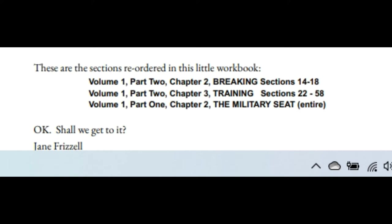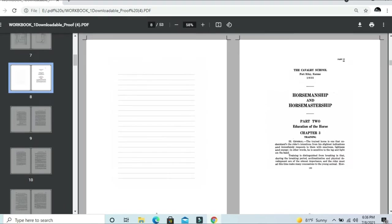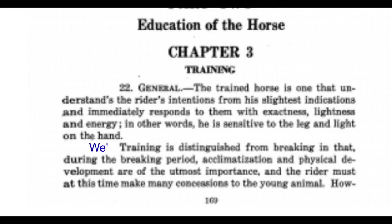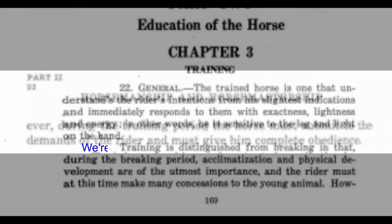Today — and these are the sections that this lecture series is going to cover — we are going to start on page 169. It is chapter 3 on training. Training is distinguished from breaking in that during the breaking period, acclimatization and physical development are of utmost importance and the rider must at this time make concessions to the young animal. However, during the training period, the horse learns to submit to the requirements of his rider and learns to give him complete obedience.